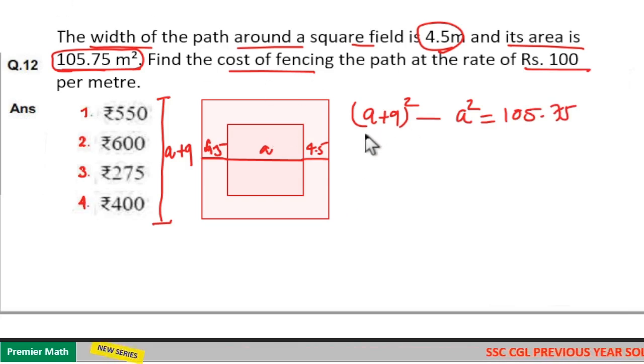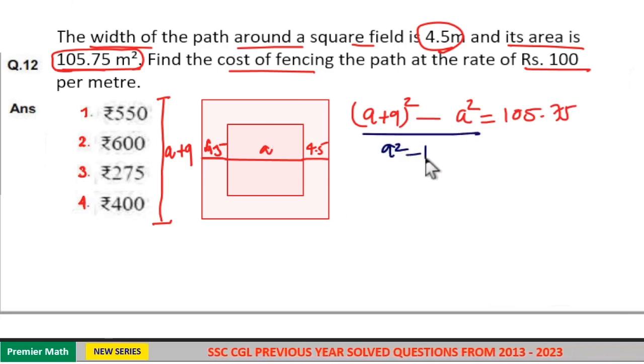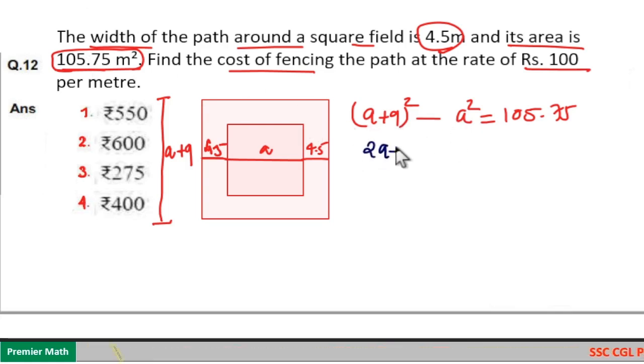Now this is in the form of a square minus b square. That is a plus 9 is a and a is b. a square minus b square is a plus b into a minus b. That is here a plus b means a plus 9 plus a, that is 2a plus 9, and a minus b means a plus 9 minus a, that is 9, which is equal to 105.75.